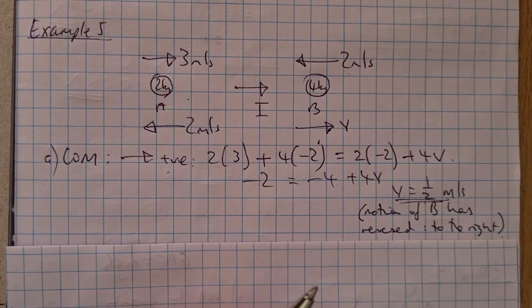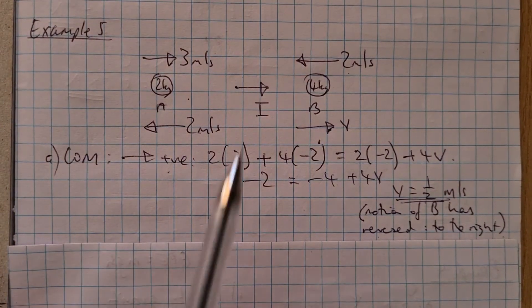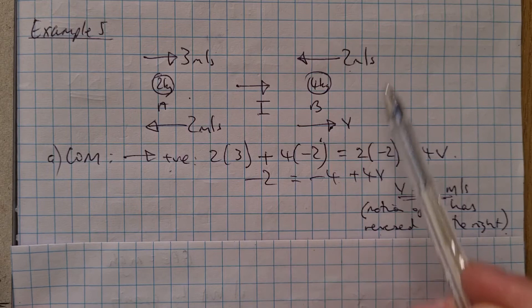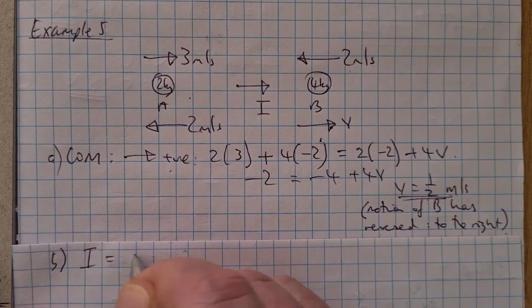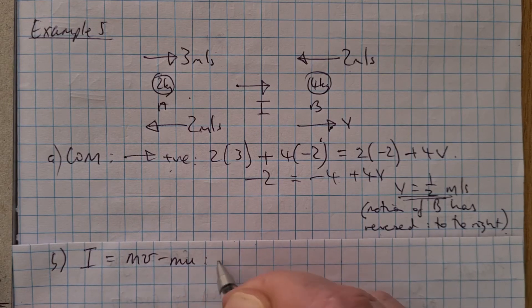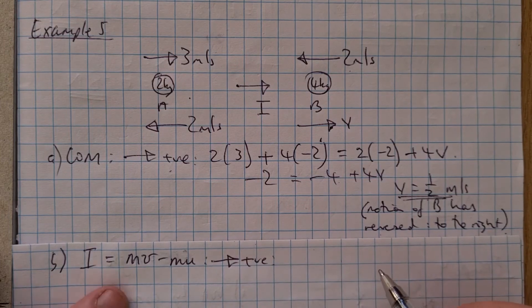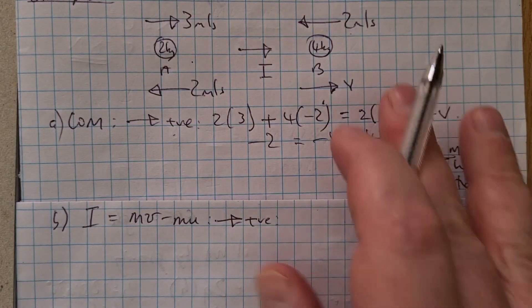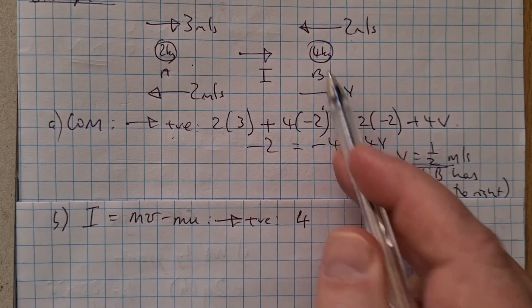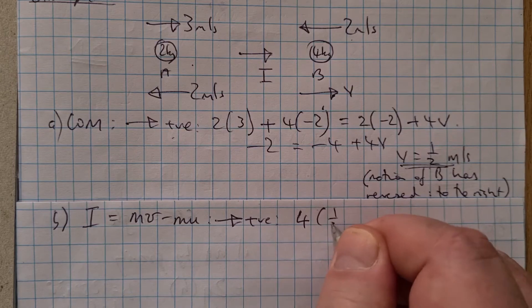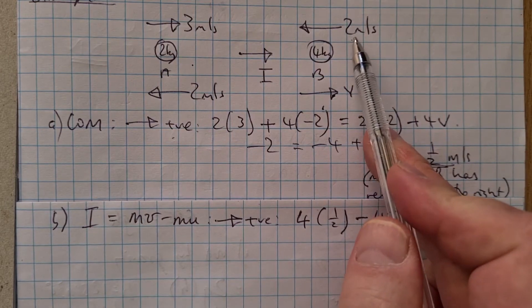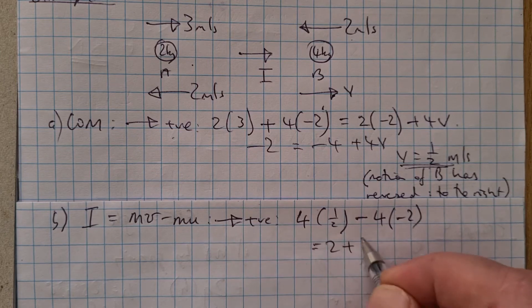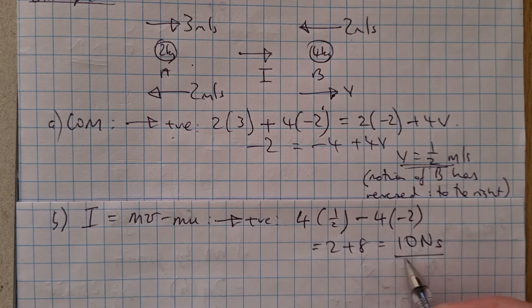For part B, we're looking at the impulse of A on B. We put the impulse in that direction and look at particle B. The impulse equals the change in momentum. Taking that direction as positive, the impulse equals the mass times the final velocity (to the right, so 4 × ½) minus the mass times the initial velocity (to the left, so 4 × (−2)). That gives 2 + 8 = an impulse of 10 Newton seconds.